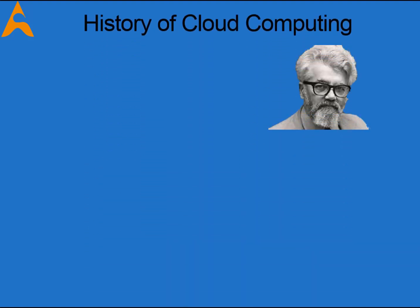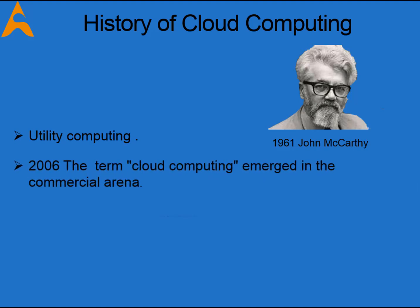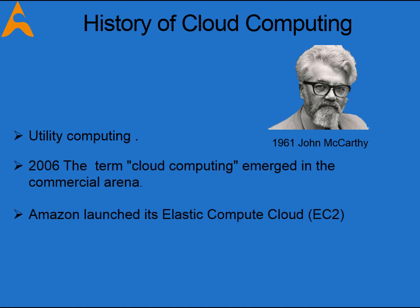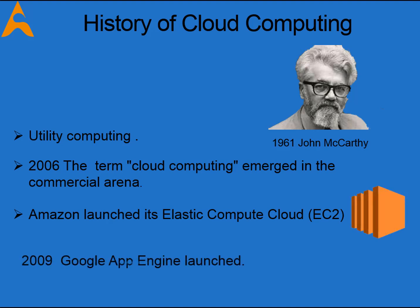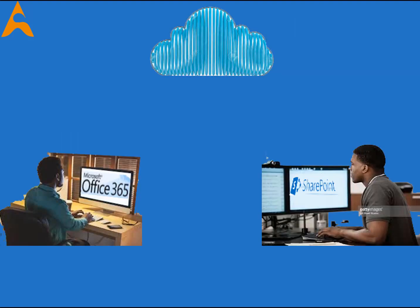Let's begin with history. It all started in 1961 with utility computing, and it started evolving in 2002 when Amazon Web Services started its Elastic Cloud Compute EC2. In the year 2006, Google also started its cloud platform.